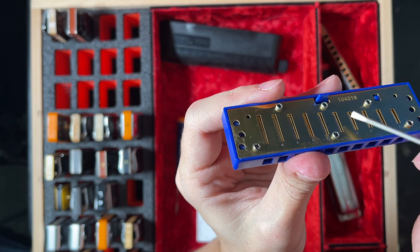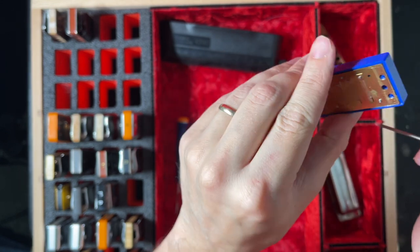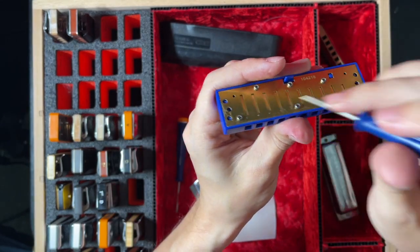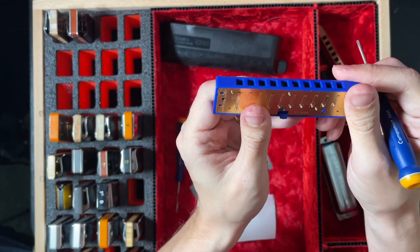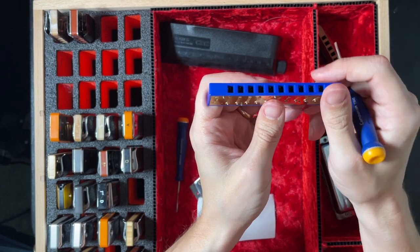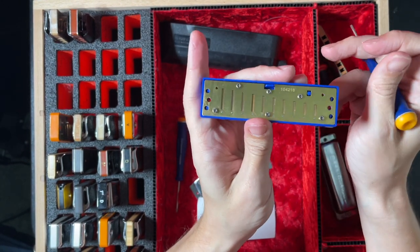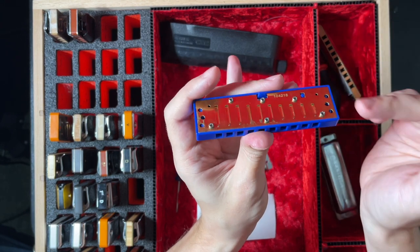And when you can minimize all these gaps, not only will it make bending easier, but it will also make overblowing possible. So if you want to overblow and you don't know how to set it up, that's the very quick version: make sure all of the gaps on your harmonica are as tight as they can be while still having the reeds function.